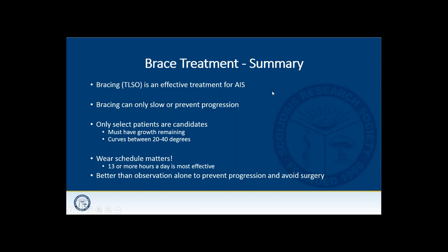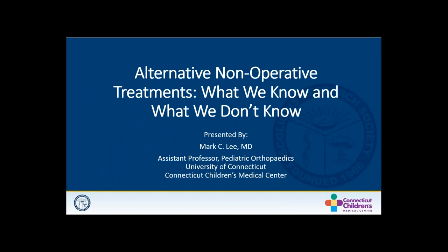To wrap up bracing: it is an effective treatment for AIS. It can only slow or prevent progression — it doesn't correct spinal alignment permanently. Only select patients are candidates: those with growth remaining and curves between 20 and 40 degrees. The wear schedule matters — patients wearing the brace 13 or more hours per day achieve the best outcomes. Bracing is certainly better than observation alone to help prevent progression and avoid surgery.